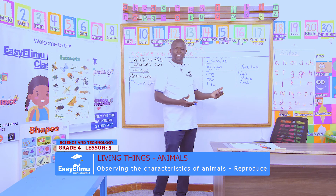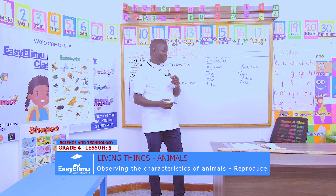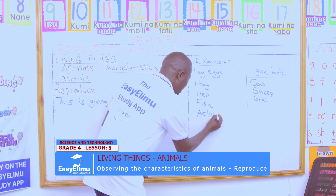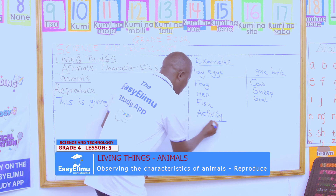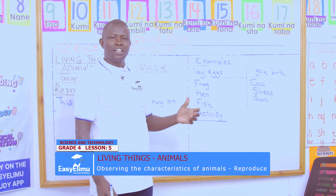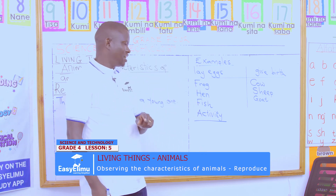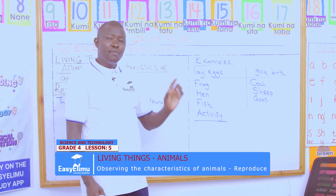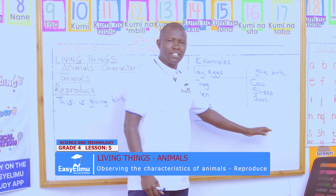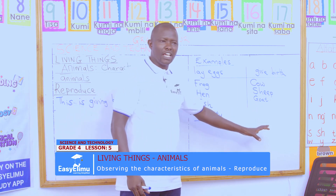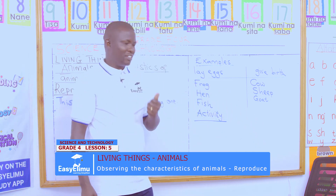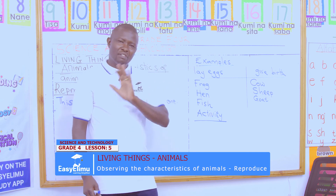In our next lesson, here is an activity for you to do when you go home: kindly write the names of the young ones of animals found in our locality — the young one and the parent animal. Bring them tomorrow for our next lesson. That marks the end of our lesson. Bye-bye.